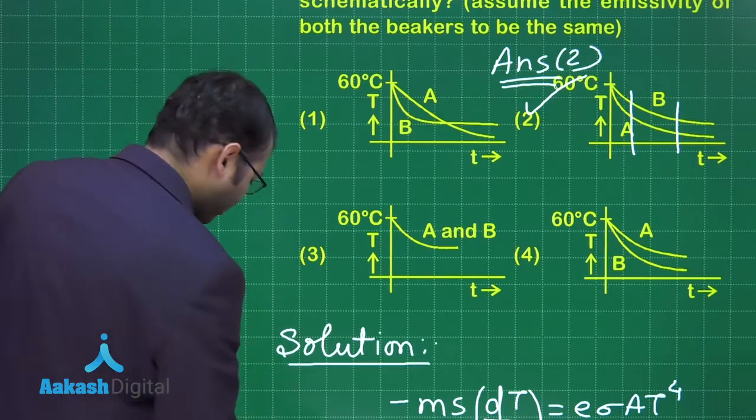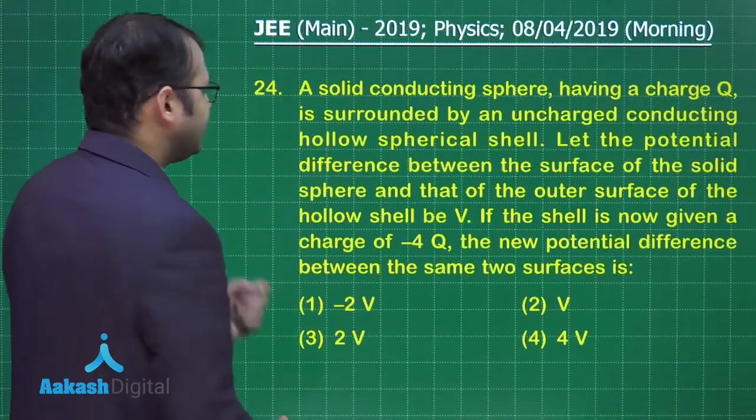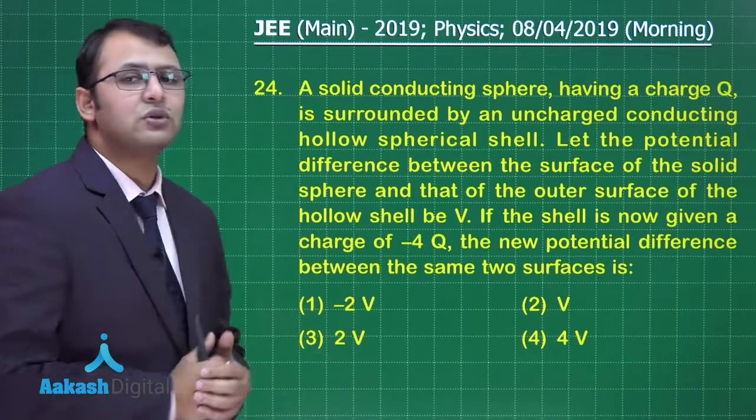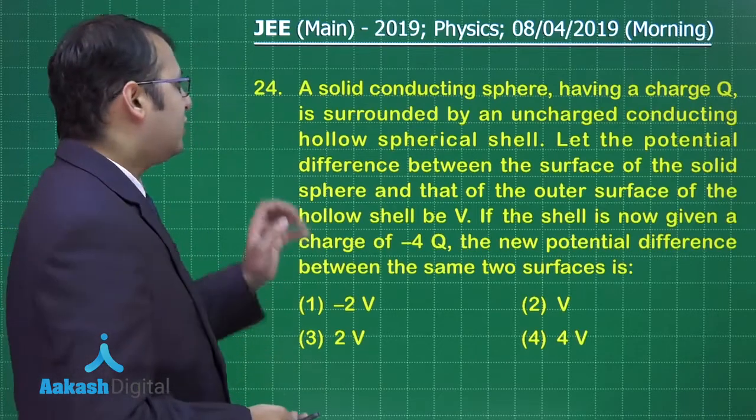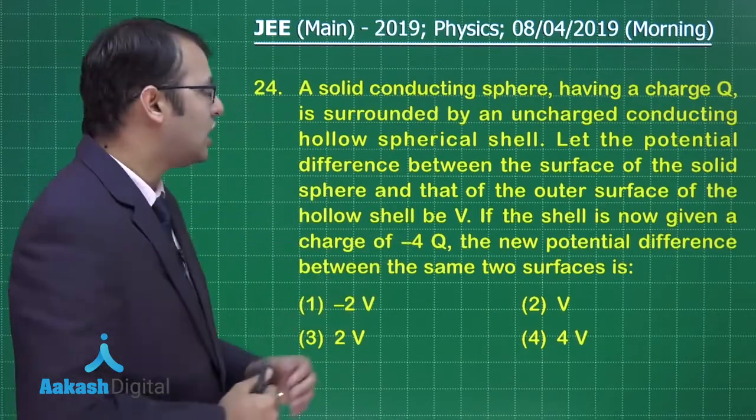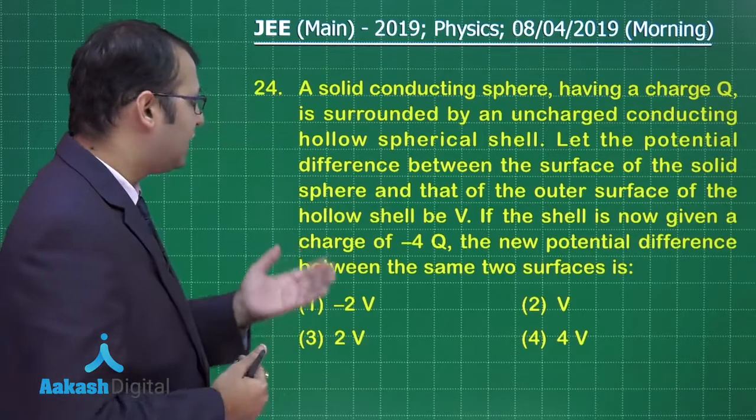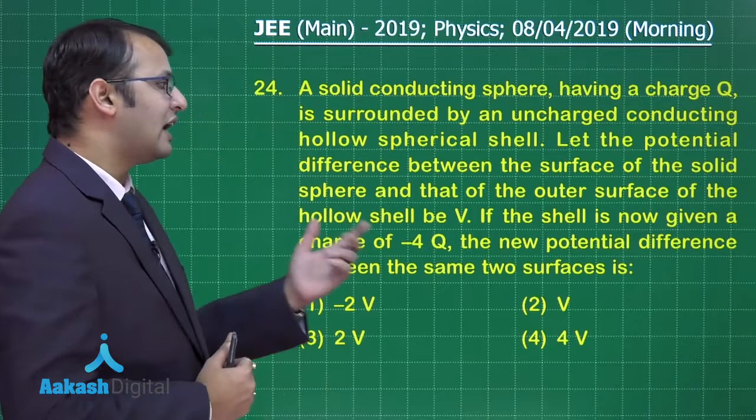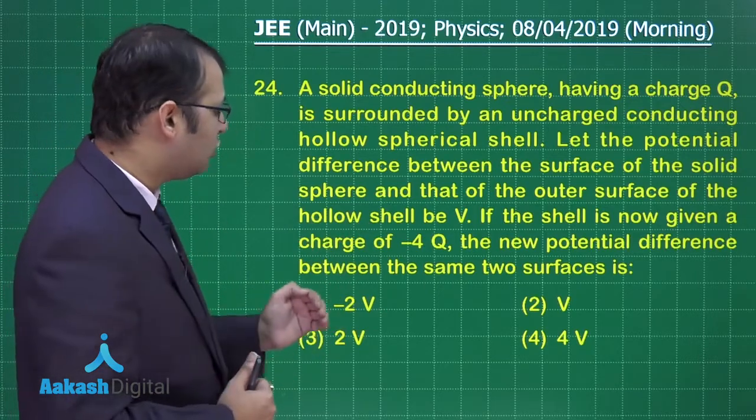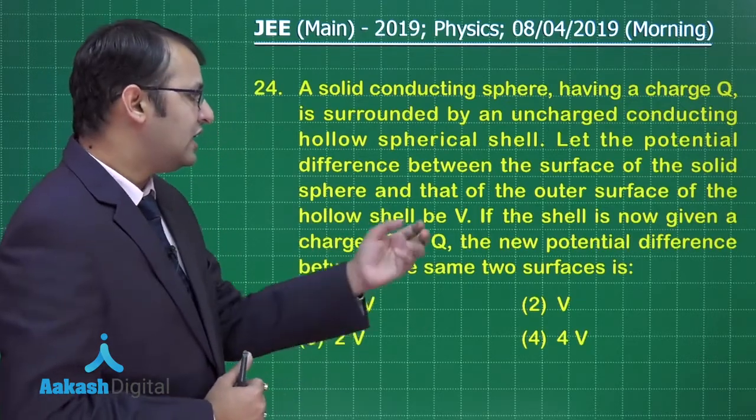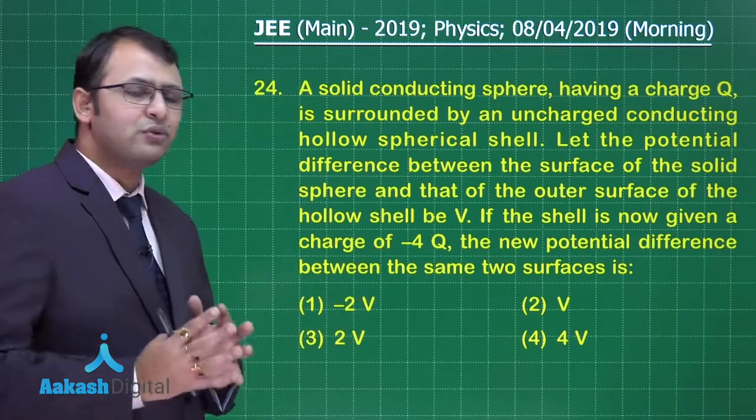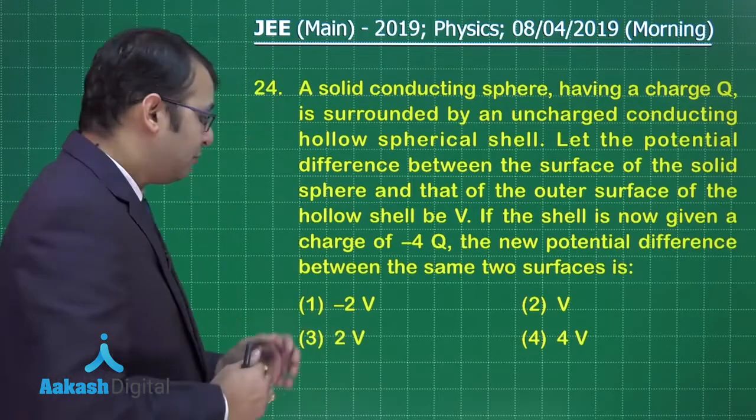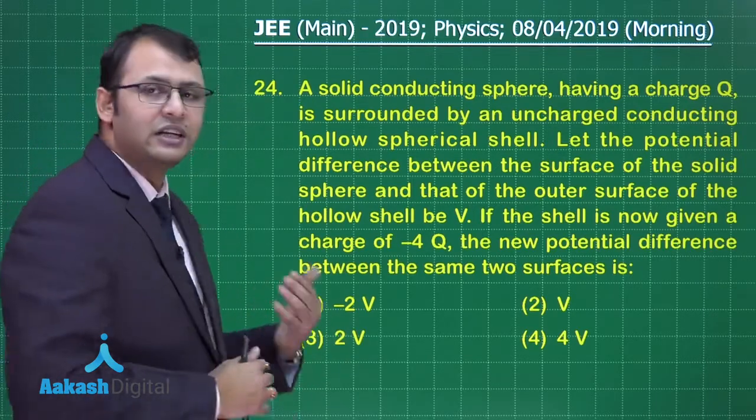Now let's move on to our next question, question number 24. This question belongs to the section of electromagnetism from the chapter electrostatic capacitance and potential. Here, a solid conducting sphere having charge Q is surrounded by an uncharged conducting hollow spherical shell. Let the potential difference between the surface of the solid sphere and the outer surface of the hollow shell be V. If the shell is now given a charge of -4Q, the new potential difference between the same two surfaces is asked.